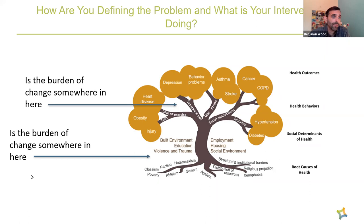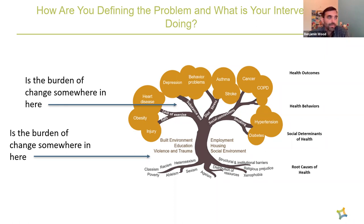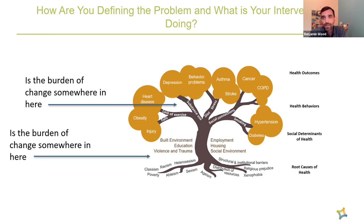One of the simplest ways to distinguish upstream from downstream is to ask: where is the burden of change falling? Are we asking individuals to modify their behaviors to fit whatever situation is causing an issue leading to poor health outcomes? If the answer is yes, that's likely a more downstream intervention. Going back to the example of the kid with uncontrolled asthma — if our approach is to develop a protocol for the family to ensure better medication adherence, that may have incredibly positive and immediate impacts.